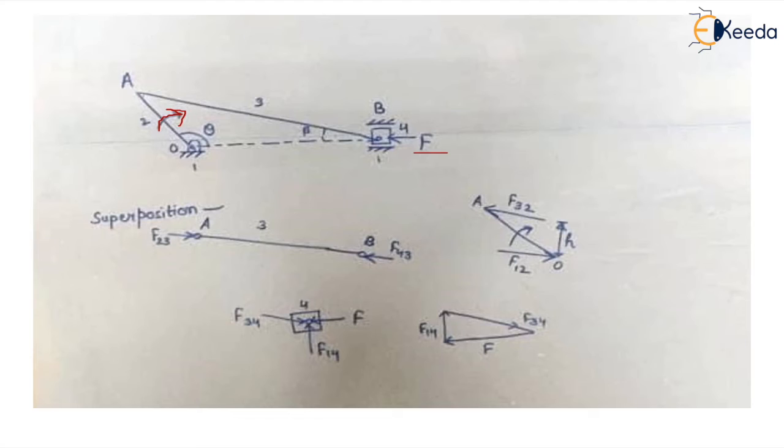So what we do whenever we have to solve these questions, we make use of the free body diagrams. We isolate all the components of the system. So it has got four parts, one which is the fixed end, two crank, connecting rod is given number three and slider is given number four. So we study the number of forces acting on each member individually, isolating it from the system and then we know what exactly is happening to each and every member and what exactly is the output.